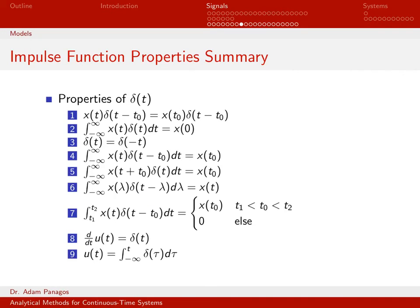This is an impulse on the lambda axis. So when lambda is equal to t, that's where this impulse is located. Since this impulse is located at lambda equals t, to use the sifting property I would replace lambda with t — and indeed, that's what I get.